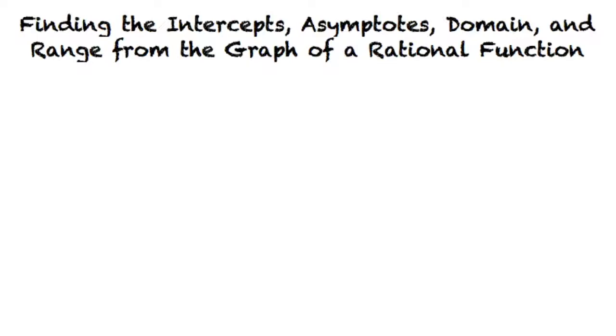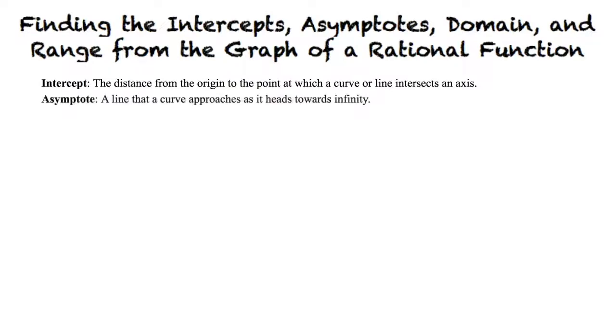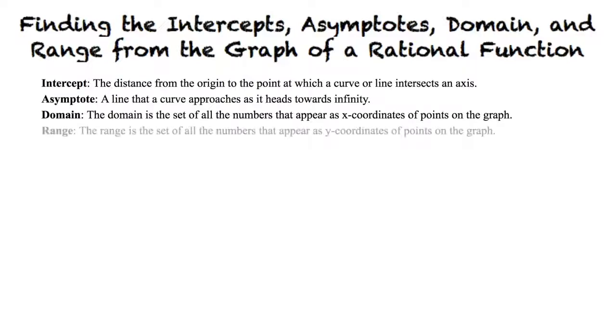Before we begin, let's take a quick moment to review some terminology. Remember that the intercept is the distance from the origin to the point at which a curve or line intersects an axis. An asymptote is a line that a curve approaches as it heads towards infinity. Our domain is the set of all numbers that appear as x-coordinates of points on a graph. The range is the set of all numbers that appear as y-coordinates of points on the graph.